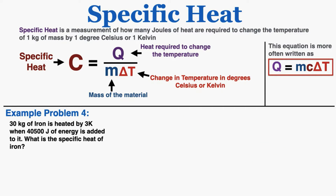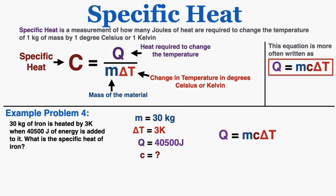In example problem four, 30 kilograms of iron is heated by 3 Kelvin when 40,500 joules of energy is added to it. What is the specific heat of iron? I have the mass, the change in temperature — and remember this equation works whether we're using Kelvin or Celsius because the changes in temperature are the same on both scales — and the energy is 40,500 joules. Plugging in the numbers and isolating C gives a final answer of 450 joules per kilogram Kelvin.